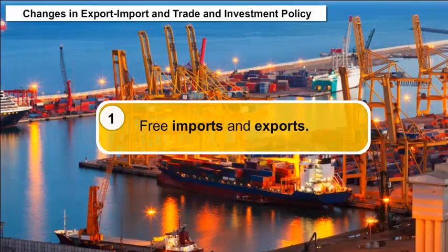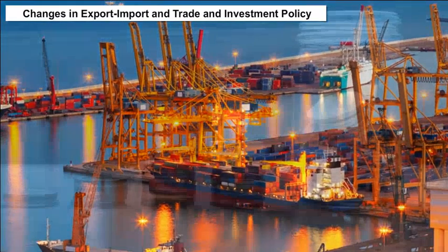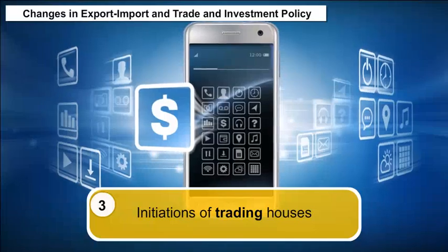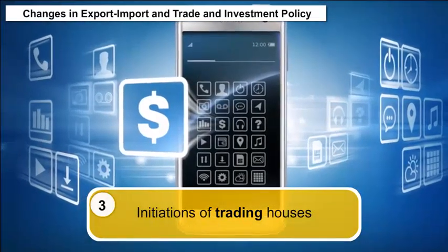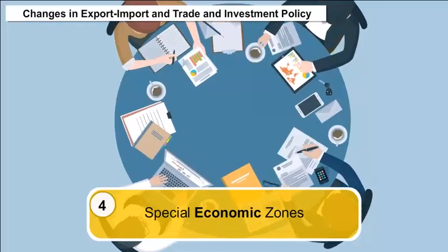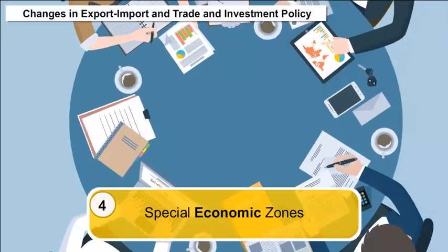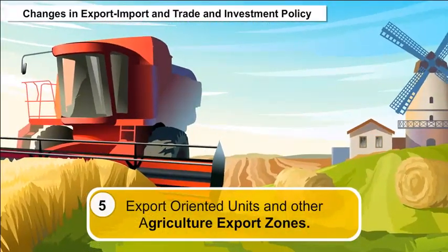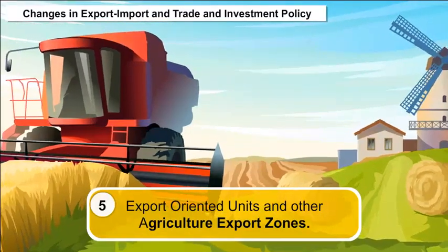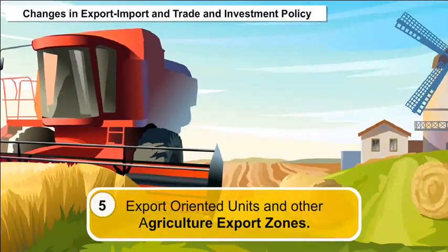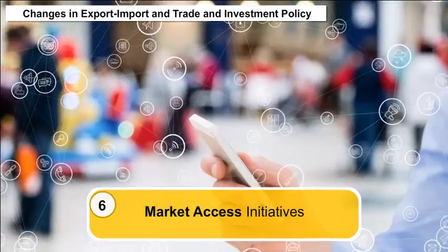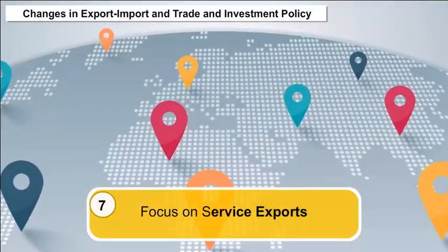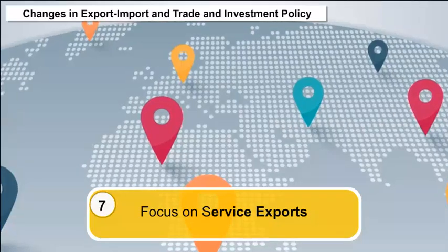The main features of the trade policy reforms include: 1. Free imports and exports. 2. Rationalization of tariff structure. 3. Initiation of trading houses. 4. Special economic zones. 5. Export-oriented units and other agricultural export zones. 6. Market access initiatives. 7. Focus on service exports. 8. Concessions and exemptions.